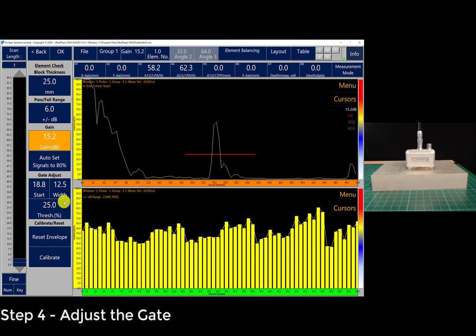Step four would be to adjust the gate so it encompasses the back wall of the test block. You can see in the top A-scan window that is fine.